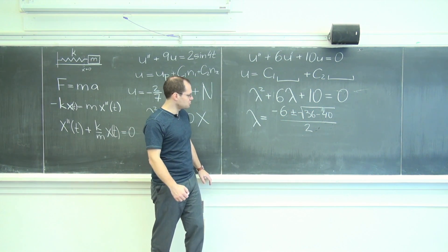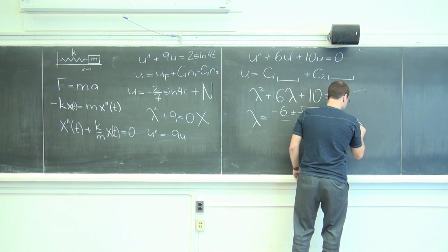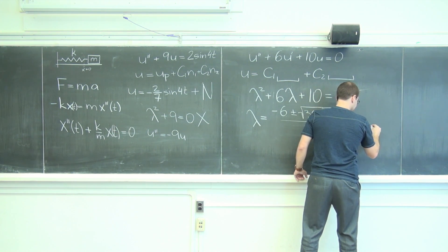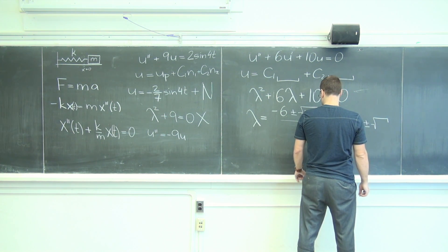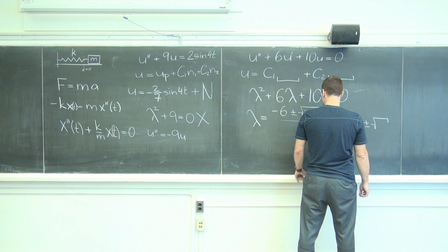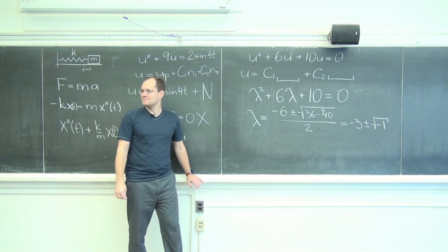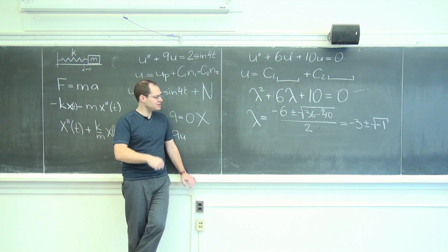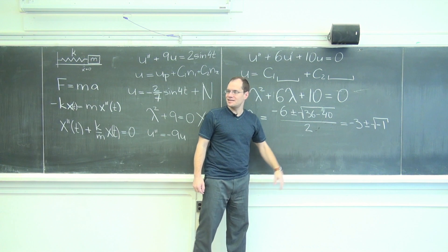So barrel through it and when you barrel through it you end up with minus 3 plus or minus square root of negative 2. Negative 1, because the 4 comes out right—negative 4 comes out as 2, gets cancelled. Negative 1.